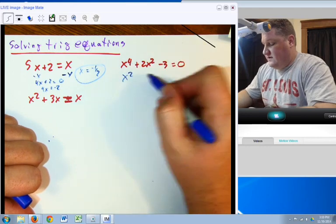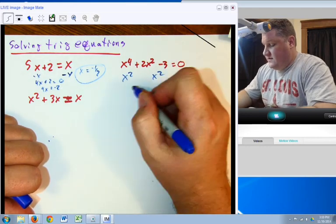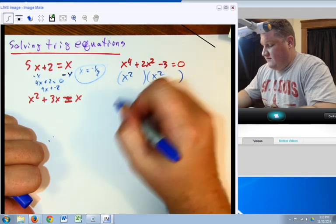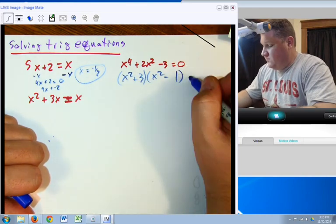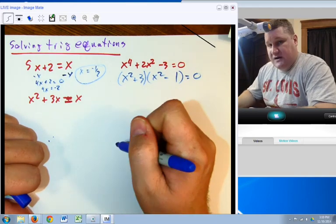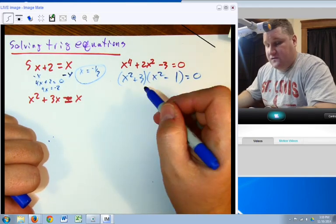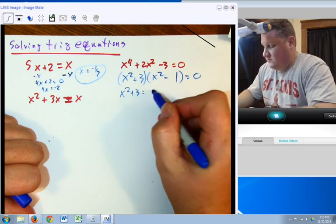Factor. So in this case, x squared, x squared, and I'm going to have a 3 and a 1 and a plus 3 and a minus 1 equals 0. Now, remember that any time you factor that, if you need to solve, you simply take each piece and set it equal to 0.